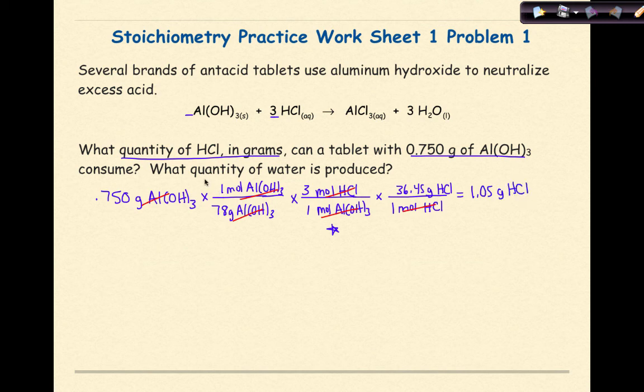The other question that is asked here is the quantity of water produced. We're going to assume that quantity of water is in grams although it's not specified. In this case, again, we're going to start with our given, 0.750 grams of Al(OH)3.